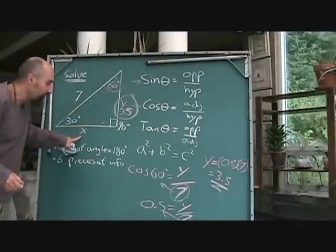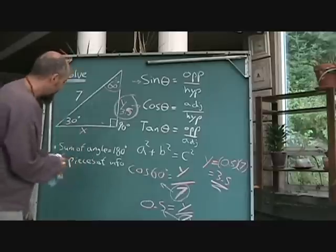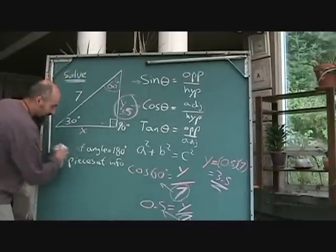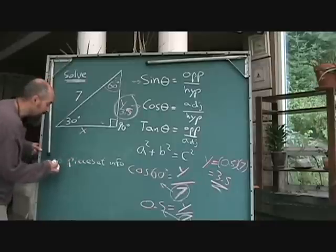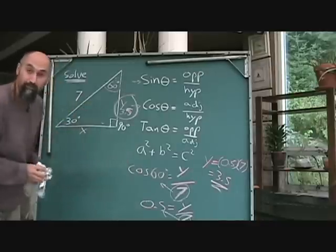Now we need to find x. How are we going to find x? Well, I'm going to erase some of this stuff, okay? Let's erase this one since we know the sum of the angles is 180. And let's erase this one because we know there's six pieces of info right now, okay?